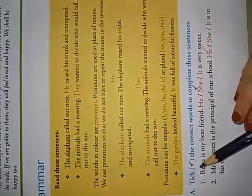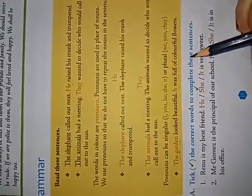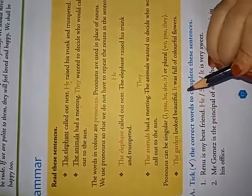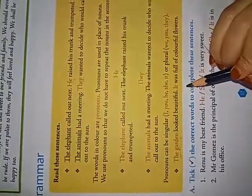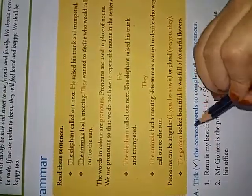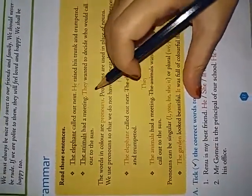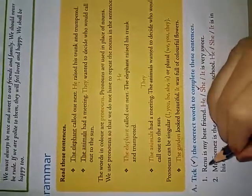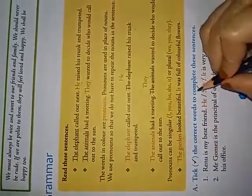Now, let's see the A bit. Tick the correct words to complete these sentences. First one. Renu is my best friend. Dash is very sweet. Renu is a name of girl. So, what it will come? Whether it will come he, she or it? Yes. She. So, you have to tick on she. Because she is a girl. That's why she.